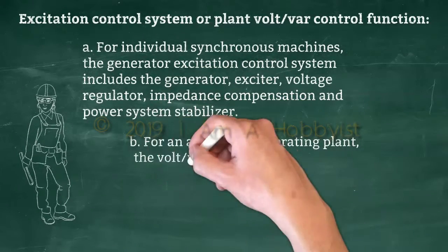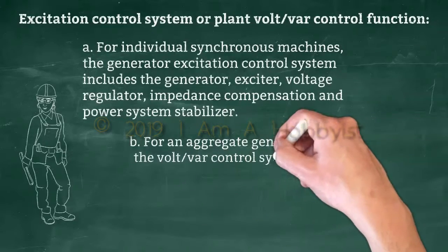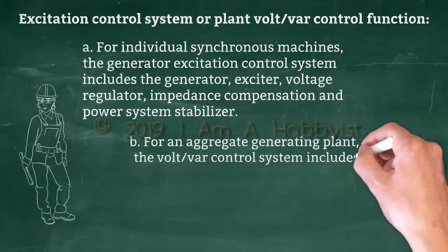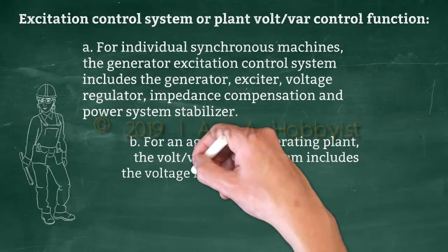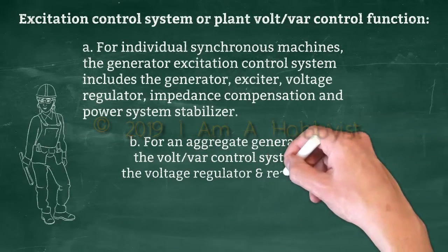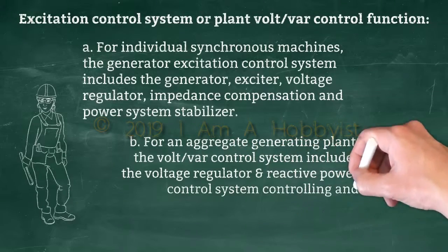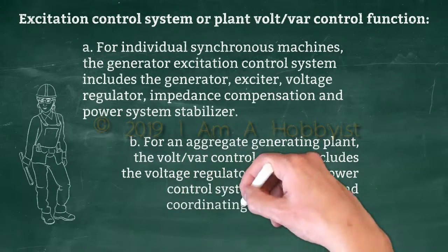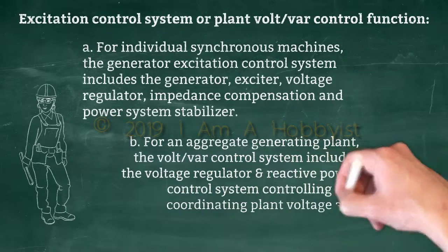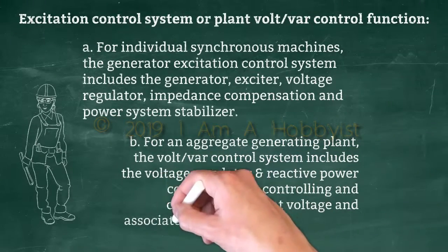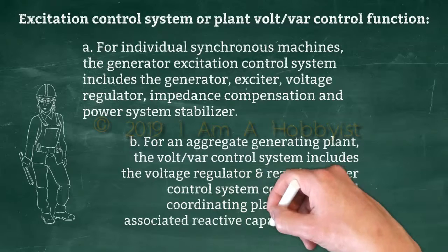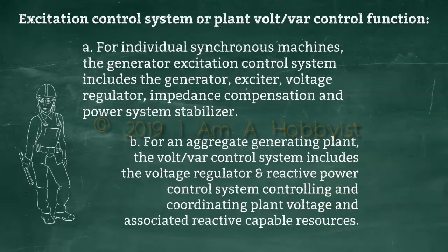For an aggregate generating plant, the Volt-Var control system includes the voltage regulator and reactive power control system, controlling and coordinating plant voltage and associated reactive capable resources.